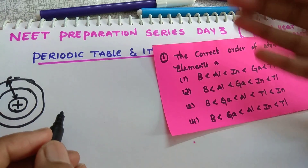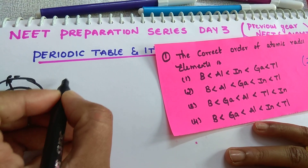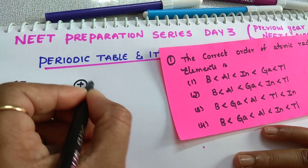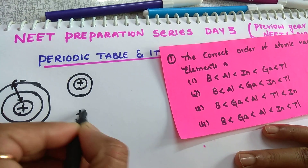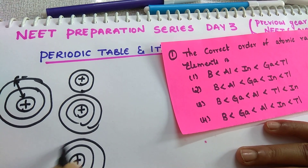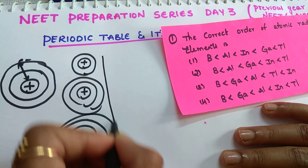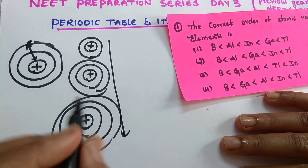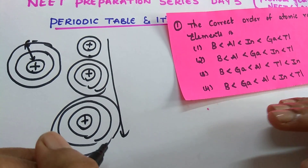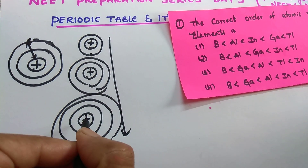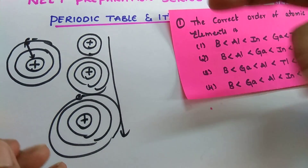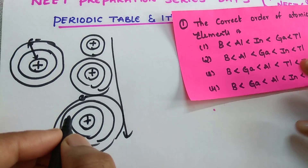How does atomic radius vary in case of groups? In a group, the first element has one shell, the next has two shells, the next has three shells. From top to bottom, the number of shells increases. Whenever the number of shells increases, the distance between the nucleus and the valence shell electron also increases. So when distance increases, the attraction between the nucleus and the electron decreases, and the size will obviously be more.